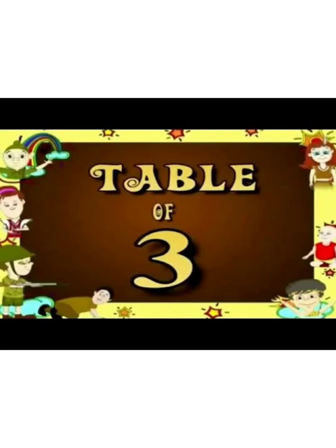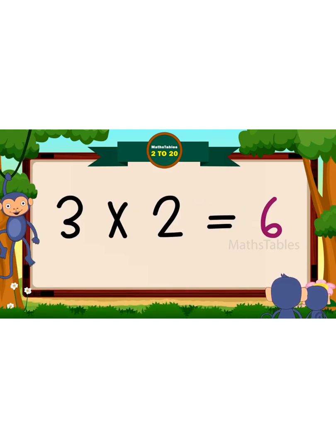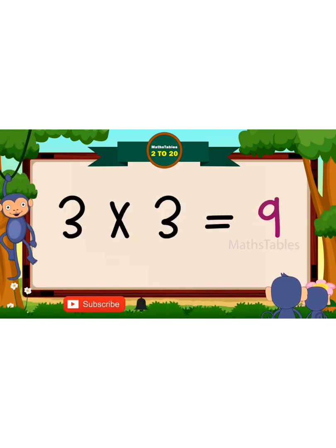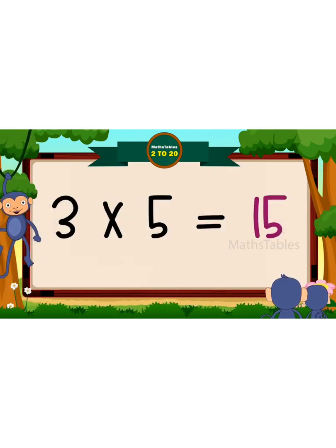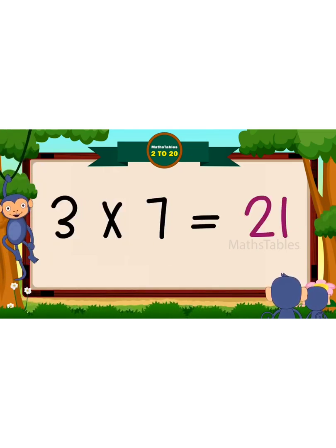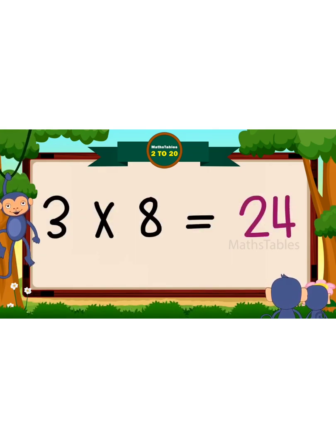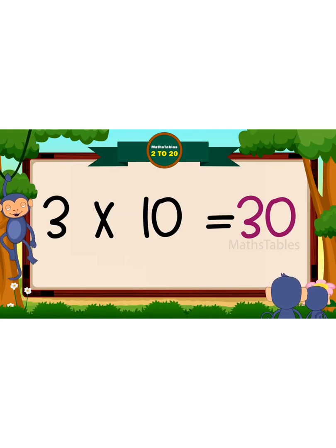3, 1 is 3. 3, 2 is 6. 3, 3 is 9. 3, 4 is 12. 3, 5 is 15. 3, 6 is 18. 3, 7 is 21. 3, 8 is 24. 3, 9 is 27. 3, 10 is 30.